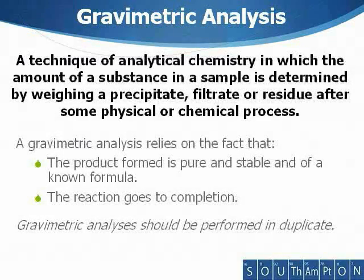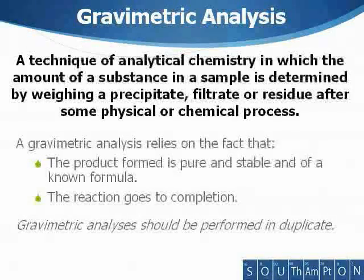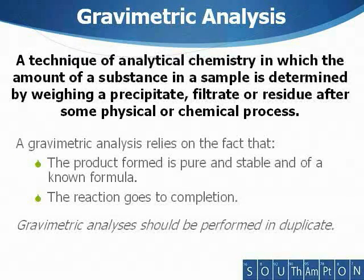In the experiment you perform, you will be using a gravimetric analysis to determine the nickel content of the hexamine nickel tetrafluoroborate sample you produced in the previous experiment. This will be done by converting the nickel in the sample to nickel dimethylglyoxamate, which will come out of the solution as an insoluble red precipitate. The precipitate will then be filtered, dried, and weighed.